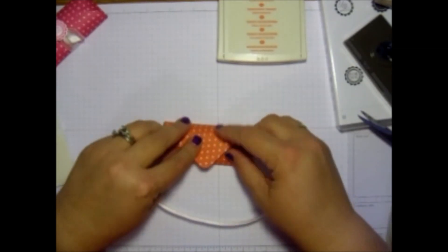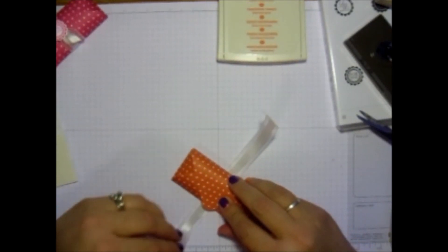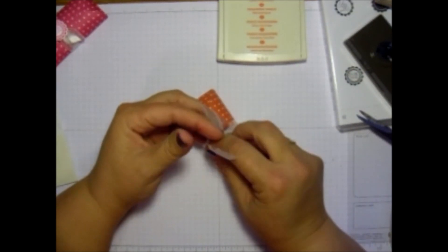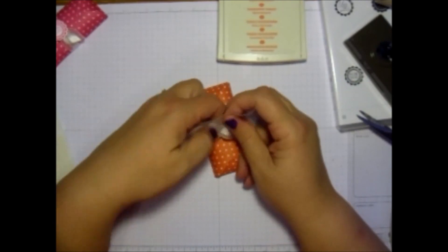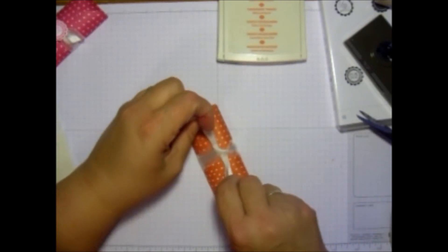And once you fold that all up nice. Just take your ribbon and tie it. You could glue it if you decide to do that. But just tie it in a knot. Nothing fancy.